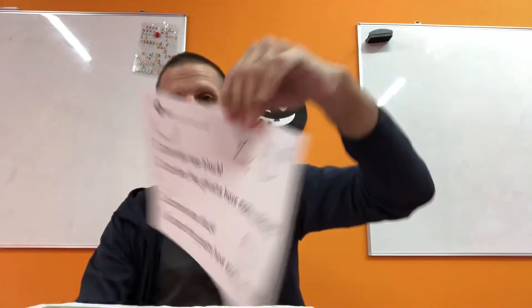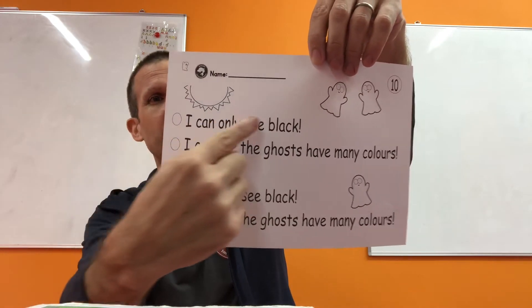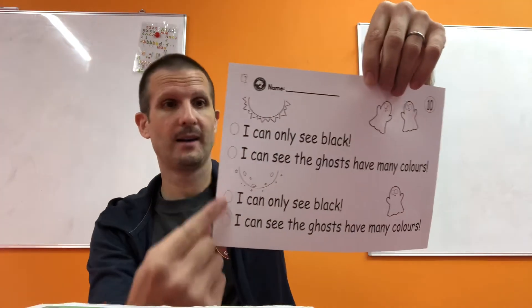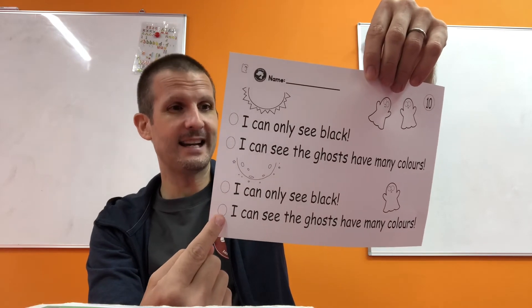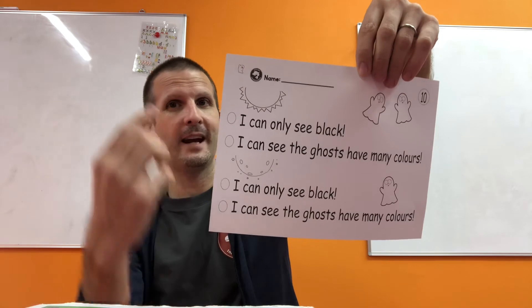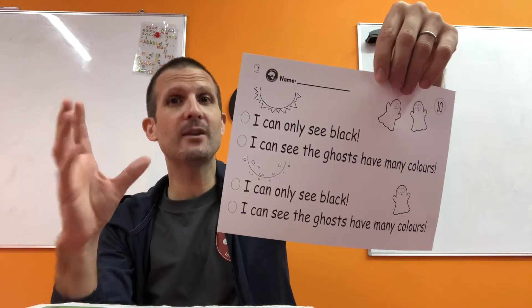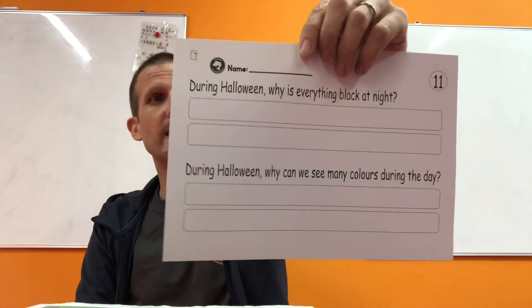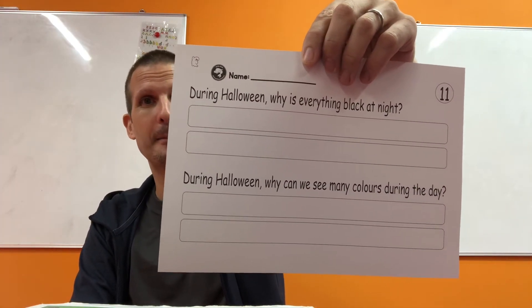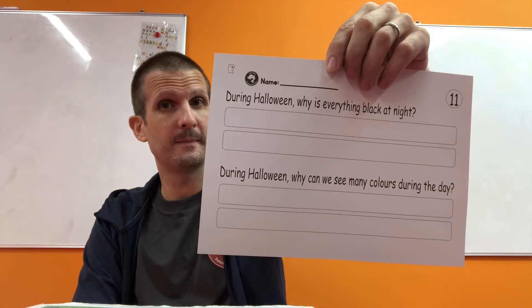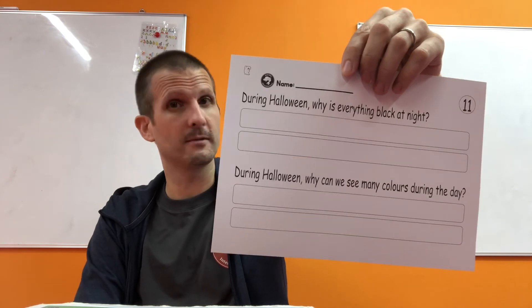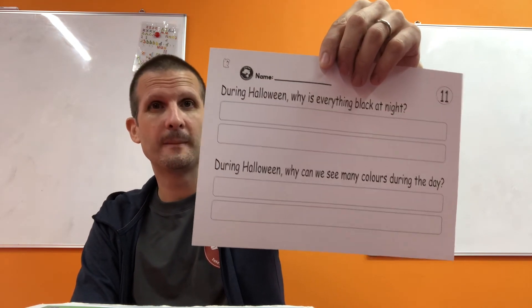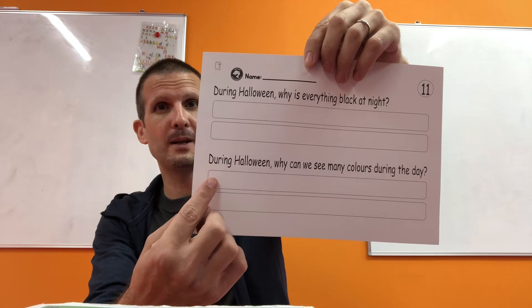Okay, number ten — some questions for you. Remember? I can only see black. I can see the ghosts have many colors. So check the correct answer. And for the correct 'many colors' sentence, get ready to listen — I'm going to tell you the colors of the eyes. Number eleven: during Halloween, why is everything black at night? What happens to the moon? What happens to the sun? During Halloween, why can we see many colors during the day? What happens to the sun and the moon? The sun comes up and the moon goes.